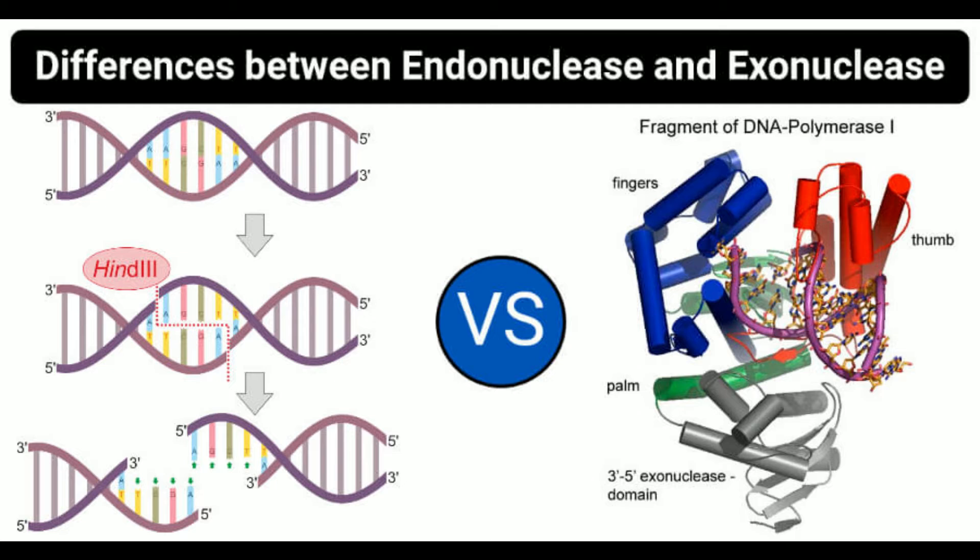An endonuclease is a group of enzymes that cleave the phosphodiester bond present within a polynucleotide chain. Endonucleases are capable of breaking the bond from the middle of a chain. These enzymes are either specific or non-specific to the sequences being cleaved.